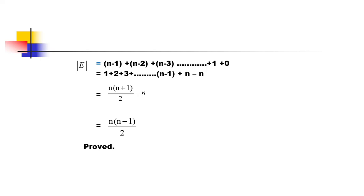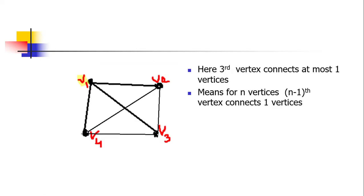Collecting all the edges and summing them: the total is 1 + 2 + 3 + ... + (n−1). This can be written as the sum of 1 to n, which equals n(n+1)/2, minus n, simplifying to n(n−1)/2. Therefore the maximum number of edges in a simple graph with n vertices equals n(n−1)/2.